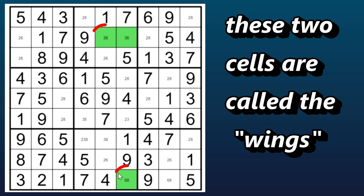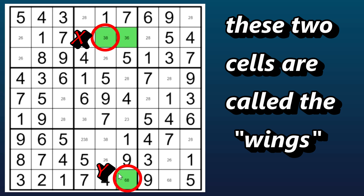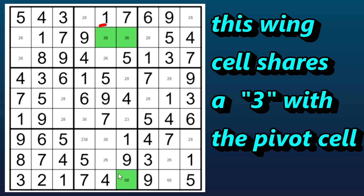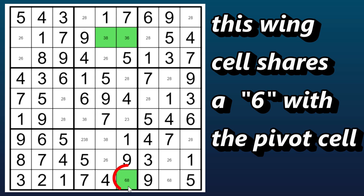These two cells are called the wings, and each wing must share one candidate with the pivot cell, but of different values. Some people label one wing X and one wing Y, and that's how it gets the name XY wing. It doesn't matter which wing is the X or the Y. So this cell, which is in the same row as the pivot cell, has a three and an eight as its two candidates, so it shares a three with the pivot cell. And this cell, which is in the same column as the pivot cell, has a six and an eight as its two candidates, so it shares a six with the pivot cell.